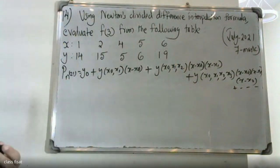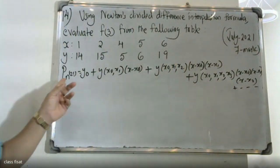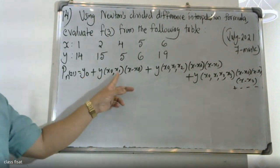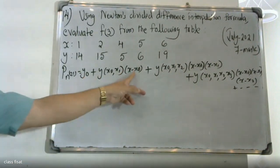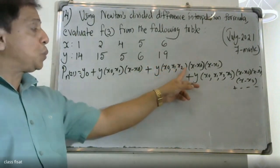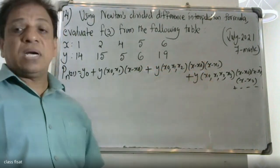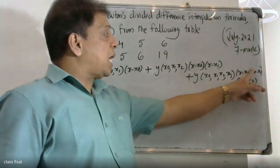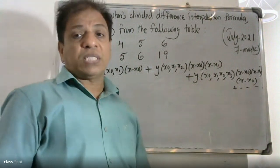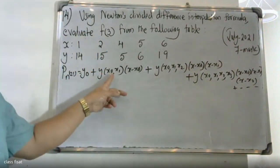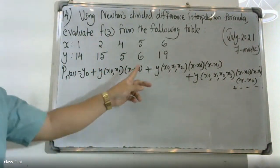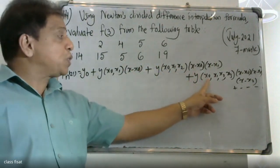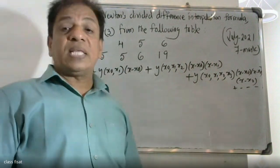Newton's divided difference interpolation formula: P(x) equals y-naught plus y(x0, x1) into (x minus x0) plus y(x0, x1, x2) into (x minus x0)(x minus x1) plus y(x0, x1, x2, x3) into (x minus x0)(x minus x1)(x minus x2) plus etc. Here y(x0, x1) is the first divided difference, y(x0, x1, x2) is the second divided difference, and y(x0, x1, x2, x3) is the third divided difference.